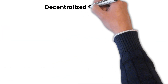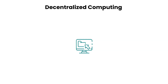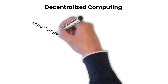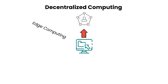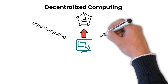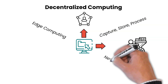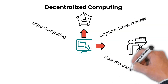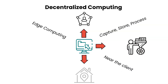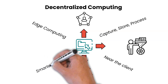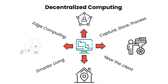Decentralized computing: the Stratos decentralized edge computing network is utilized to capture, store, process and analyze data near the client, where the data is generated, instead of in a centralized data processing warehouse. Edge computing aims to make our lives smarter and easier.